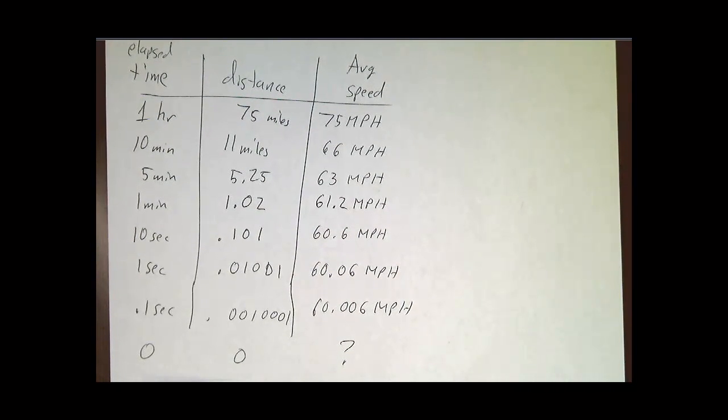But can you average over zero time? Can you figure out your speed right now by saying, how fast have I gone right now divided by how long it took? That doesn't make sense, you get zero over zero.